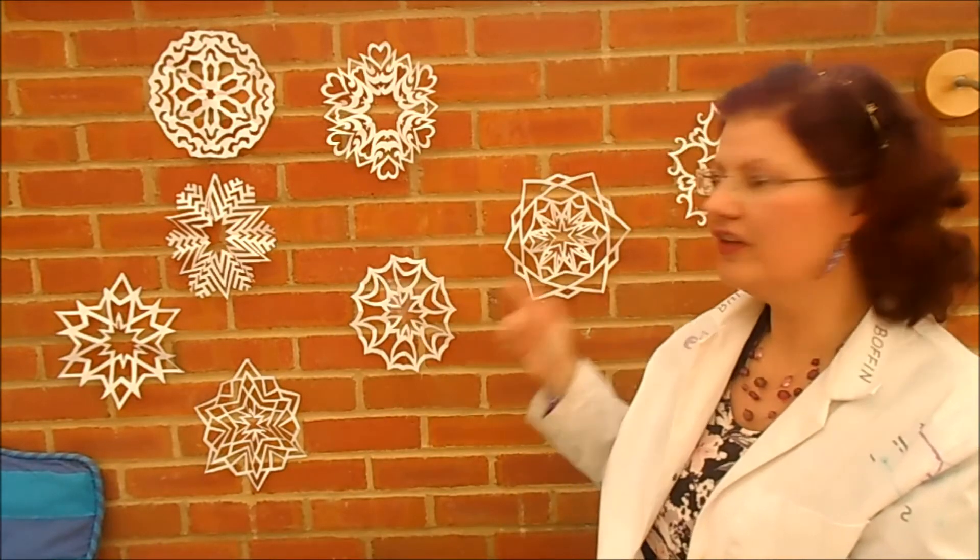Snowflakes have six-fold symmetry like this. They look more like hexagons than squares or octagons.